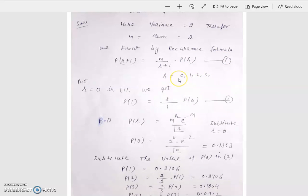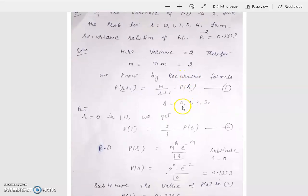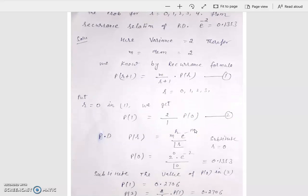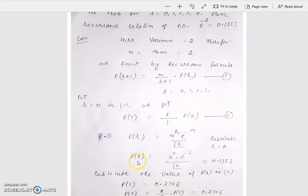When we substitute R equal to 0 in the recurrence formula, the value is P(1) equal to 2 upon 1 times P(0). This is equation number 2. We need the value of P(0). The probability of Poisson distribution is P(R) equal to M to the power R times E to the power minus M upon factorial R. Substituting R equal to 0, P(0) equals 2 to the power 0 times E to the power minus 2 upon factorial 0. Factorial 0 is 1, 2 to the power 0 is 1, and E to the power minus 2 is 0.1353. Therefore the probability P(0) is 0.1353.